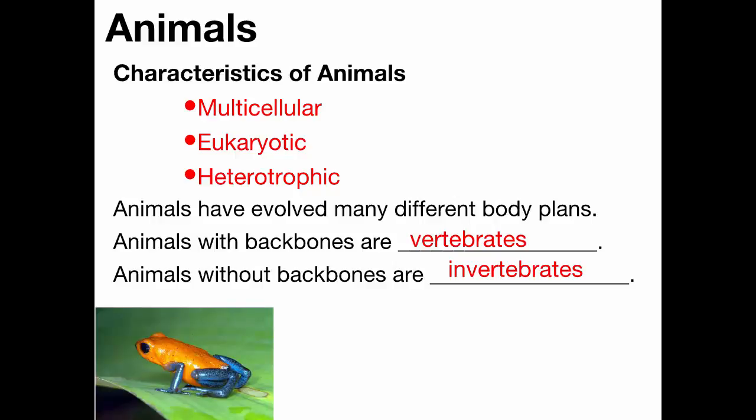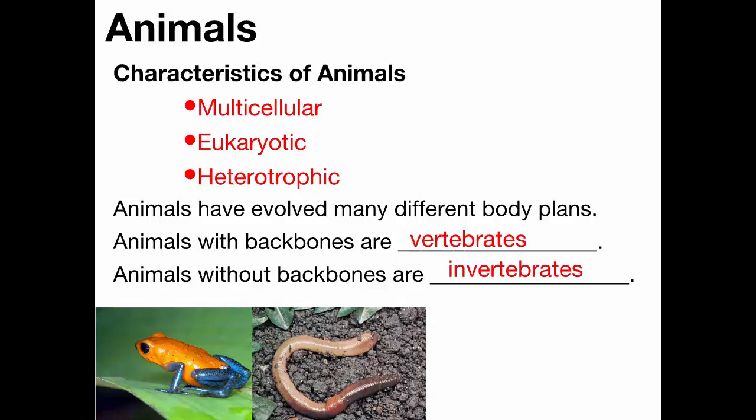Vertebrate or invertebrate? A frog is a vertebrate — it's an amphibian, one of the five classes of vertebrates. A worm is an invertebrate: soft body, no skeleton inside of it.